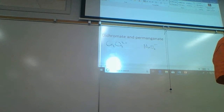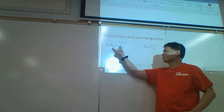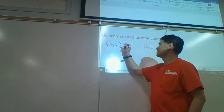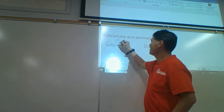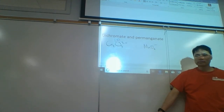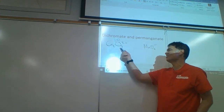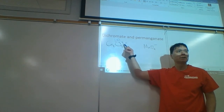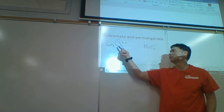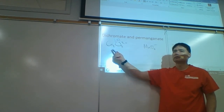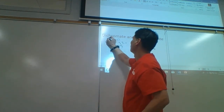When we assign the numbers, we assign oxygen first. Oxygen gets minus 2. I don't remember every step-by-step rule — what I remember is the general pattern: the more electronegative element gets its preferred oxidation state. Oxygen is more electronegative, so it gets minus 2. If oxygen is minus 2 in Cr₂O₇²⁻, then what does that make chromium? Plus 6. Chromium gets plus 6.